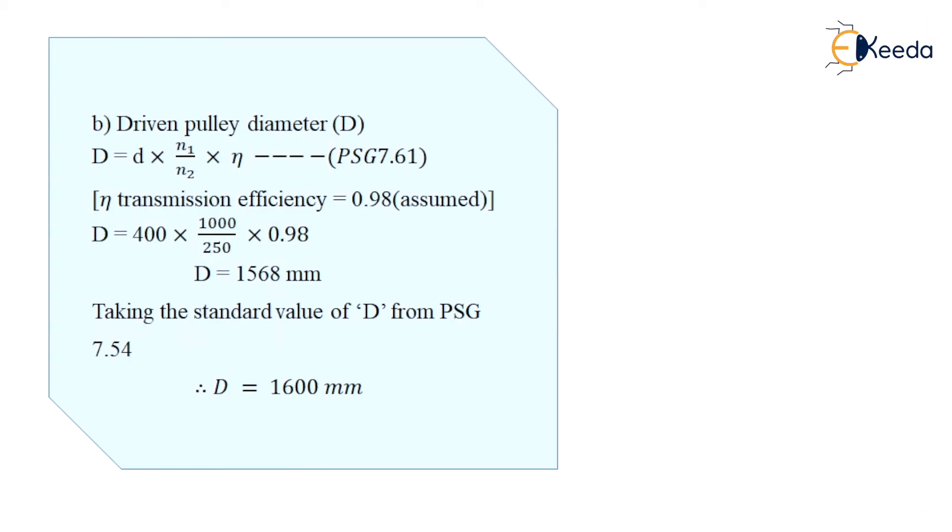Next to find driven pulley diameter, that is capital D. The formula is capital D is equal to small d into N1 upon N2 multiplied by η, that is transmission efficiency. We have assumed here 0.98. So if I substitute the values in the above formula, I get the value of capital D as 1568 mm. Taking the standard value of capital D from the PSG, I select capital D is equal to 1600 mm.